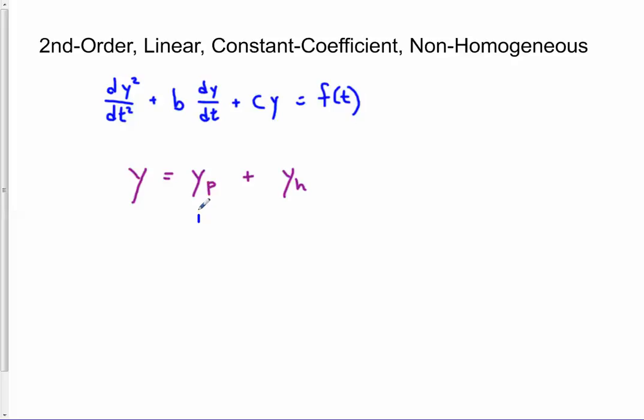And the method we've been using for that has been the method of undetermined coefficients, which means we make an educated guess as to what form that should be, based on the form of the f of t, the forcing term over on the right. And the only thing that we don't guess is the specific coefficients in front of the term or terms. But then we plug it in and we figure it out. So that's what we've been doing. And we've looked at polynomial forcing terms and we've looked at exponential forcing terms. And sine and cosine were briefly mentioned, but we didn't do any examples.